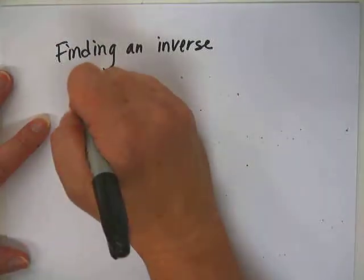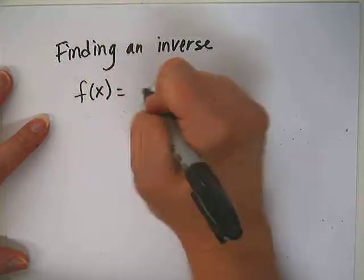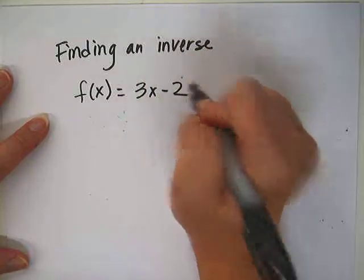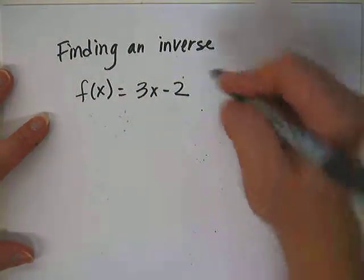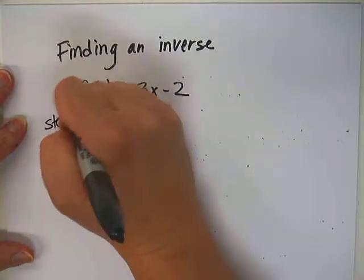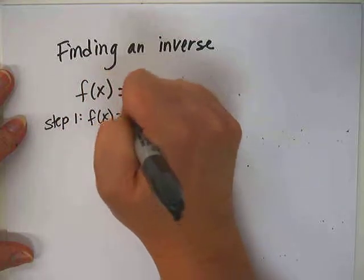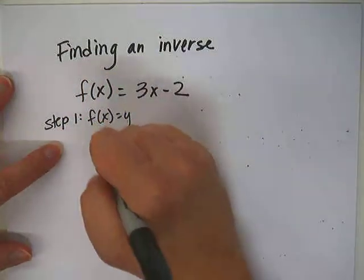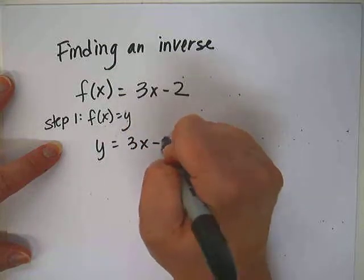Let's find the inverse of f(x) = 3x - 2. Step 1: f(x) equals y, so y = 3x - 2.